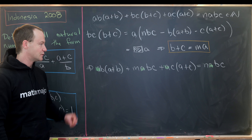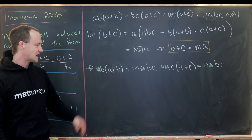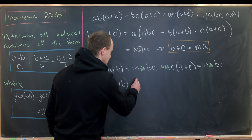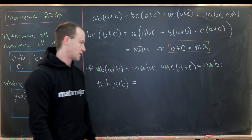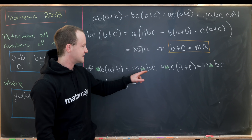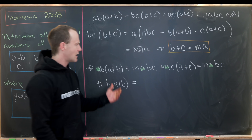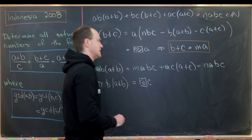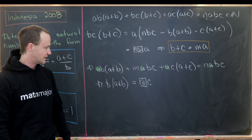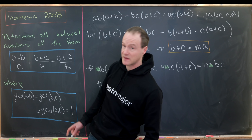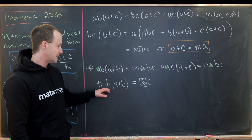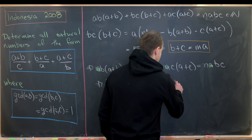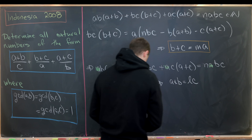Now we play a similar game, solving for B·(A+B) in terms of everything else. Moving terms over, we notice everything on the right is a multiple of C. Because of pairwise relative primeness, B is not a multiple of C, so A+B must be a multiple of C. We write A+B = L·C.